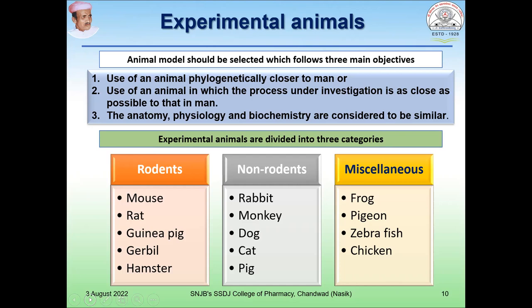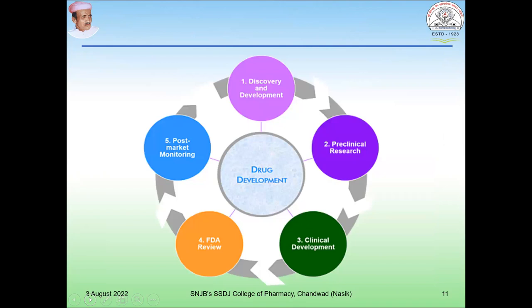Experimental animals are divided into three main categories. The first is rodents, the second is non-rodents, and the third is miscellaneous. Rodents include mouse, rat, guinea pig, gerbil, and hamster. Non-rodents include rabbit, monkey, dog, cat, and pig. Miscellaneous includes frog, pigeon, zebra fish, and chicken.